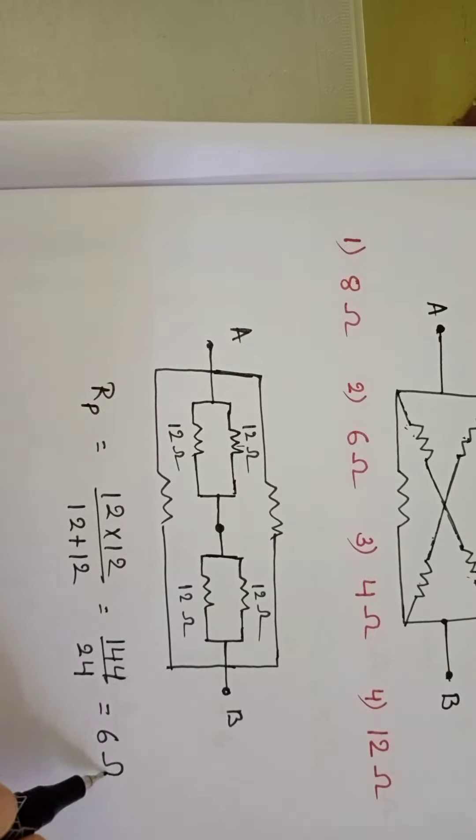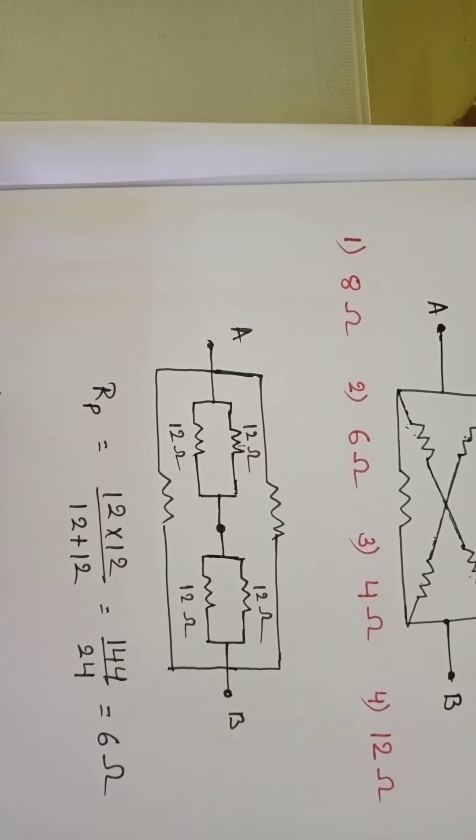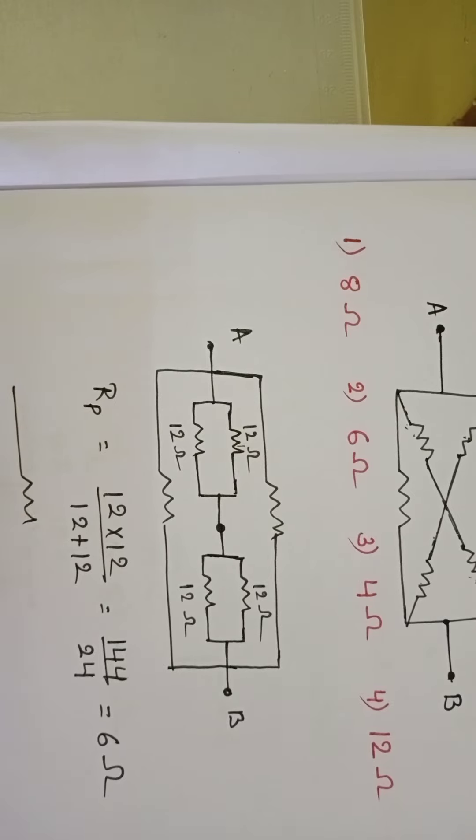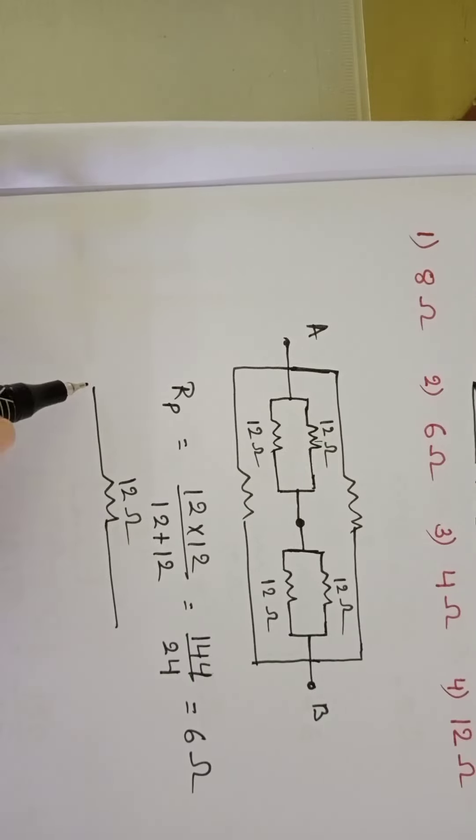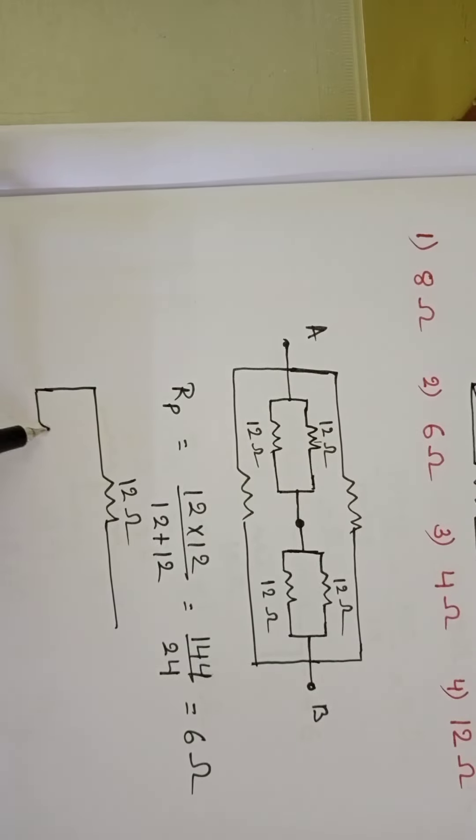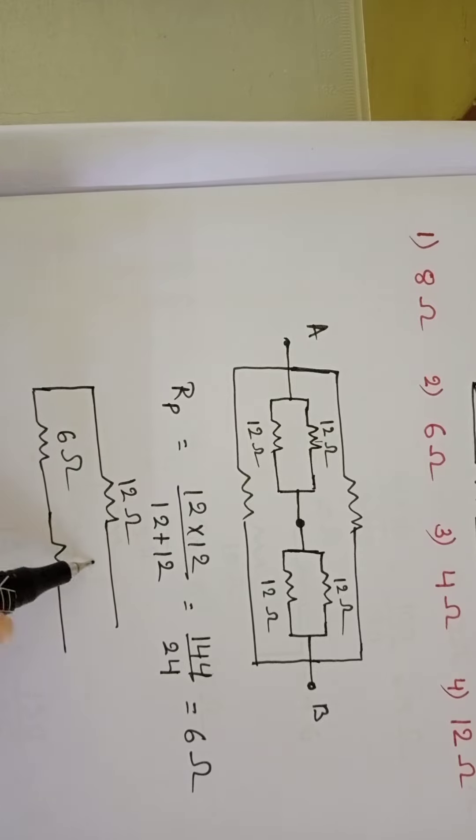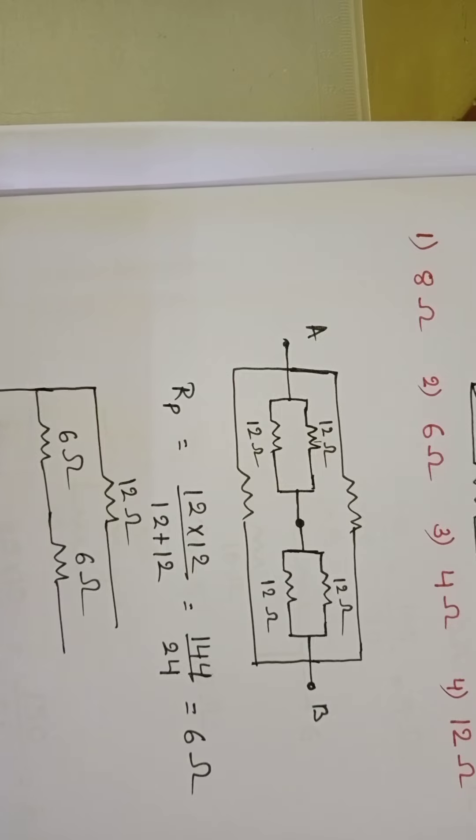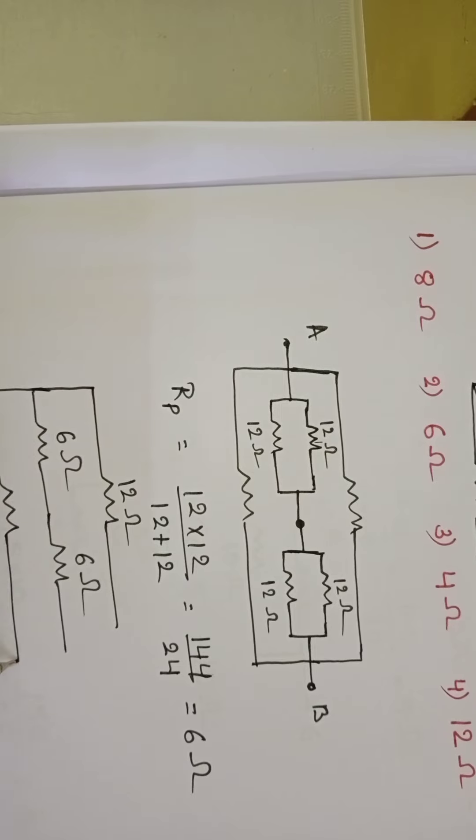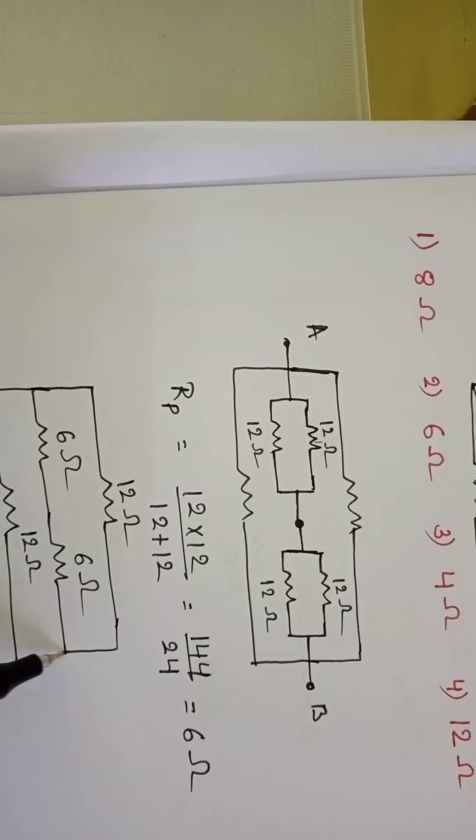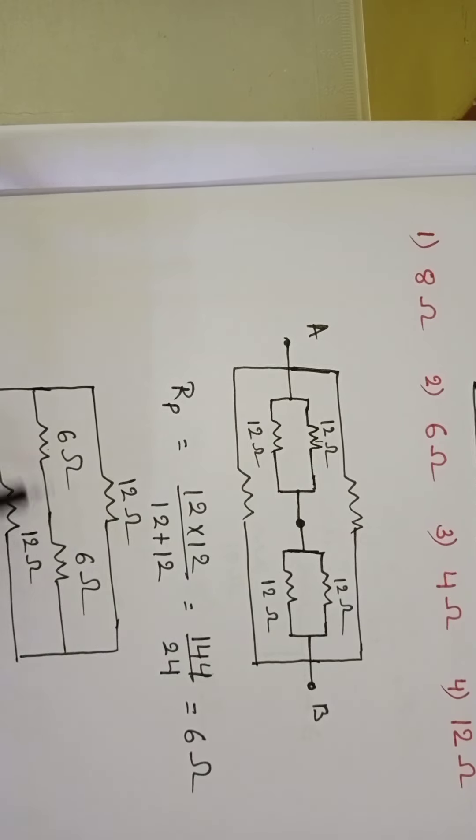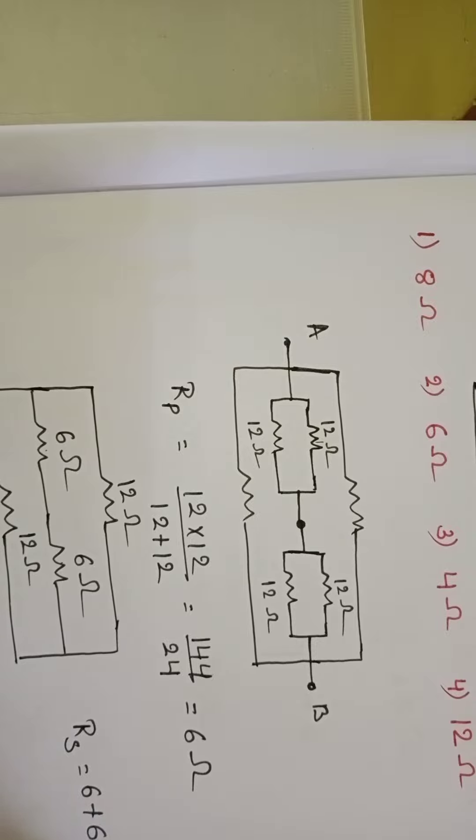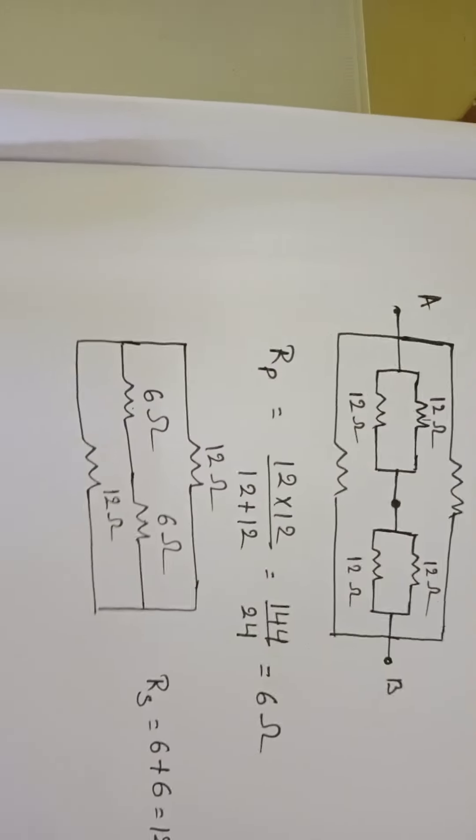R is equal to 6 ohm. Now 12 ohm resistor, and here 6 ohm, 6 ohm resistor, and here also 12 ohm resistor. Now 6 ohm and 6 ohm, these two resistors are in series, so 12 ohm. So totally here, 12 ohm resistor, 12 ohm and 12 ohm. These two resistors are in series, so 12 ohm, so totally here.